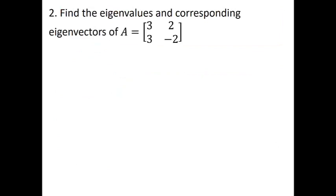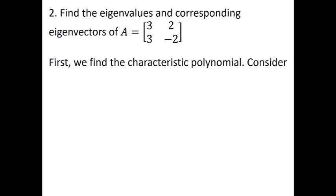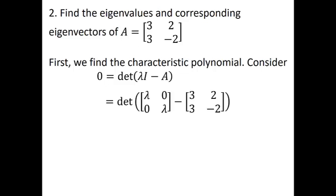For our first example, let's find the eigenvalues and corresponding eigenvectors of the 2 by 2 matrix [3, 2; 3, -2]. The first thing we need to do is find the characteristic polynomial. We want to know for what values of lambda the determinant of lambda I minus A equals 0. So we compute the determinant of lambda I minus A, subtract those two matrices, and that leads us to the determinant of [lambda - 3, -2; -3, lambda + 2].